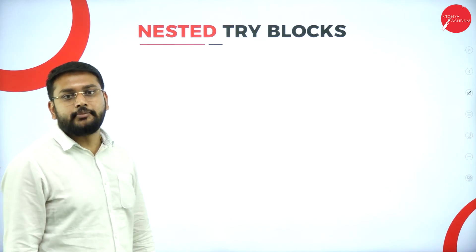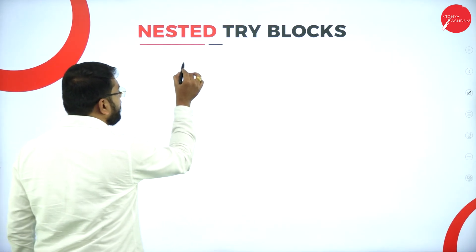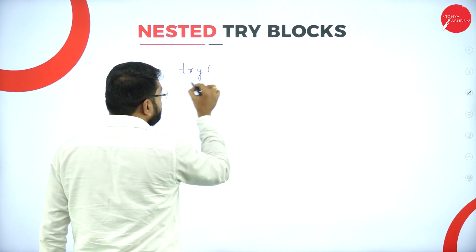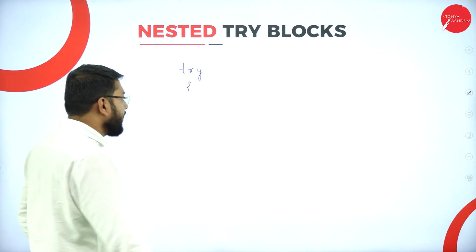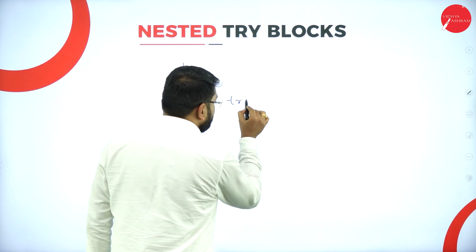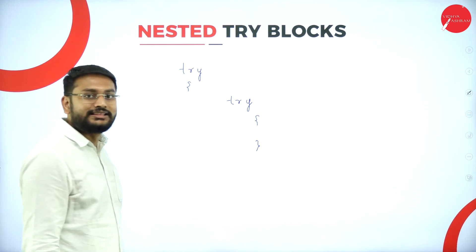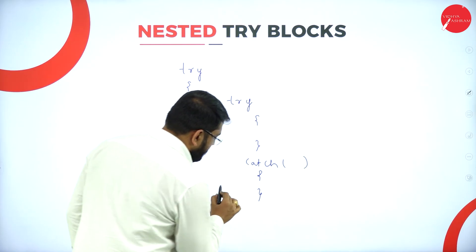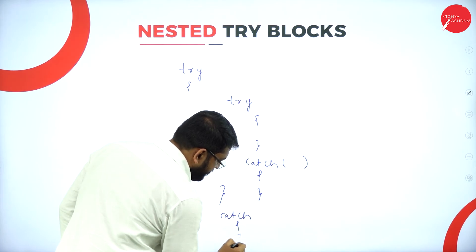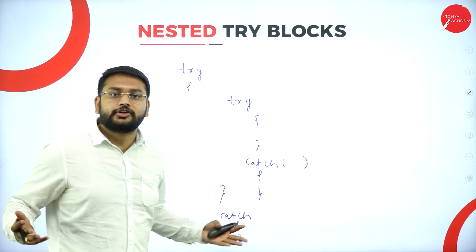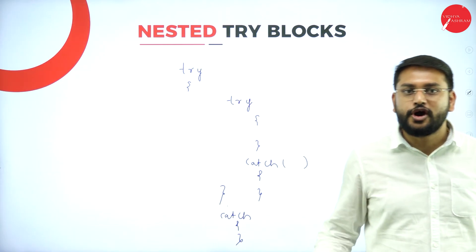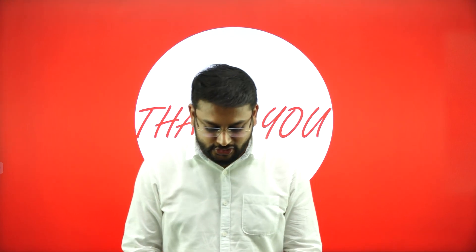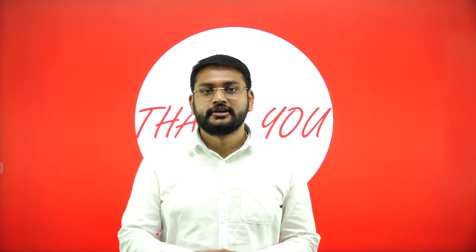A nested try block means having a try block inside another try block. You use the keyword 'try', open a curly brace, and inside that try you write another try block, each with its own catch block. That is what is called a nested try block. With that, this chapter comes to an end — I hope you understood all the content. Thank you very much, see you in the next session.